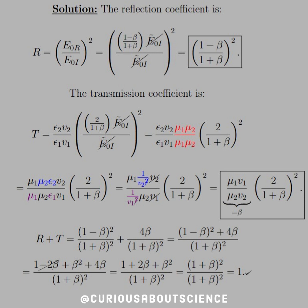To confirm energy conservation — R plus T equals 1 — we square everything, multiply through, and find a common denominator. The reflection term gives (1 minus β)² and the transmission gives 4β, both over (1 plus β)². Adding across: (1 minus β)² plus 4β. Expanding: 1 minus 2β plus β² plus 4β. The negative 2β and 4β combine to leave 2β, so we refactor to get (1 plus β)². The numerator and denominator are the same, so they cancel to 1.